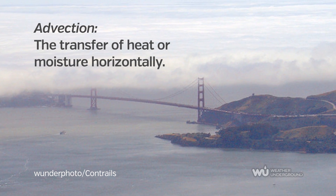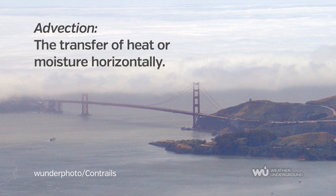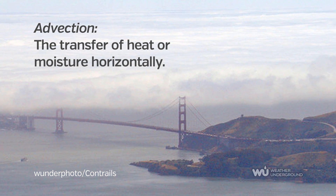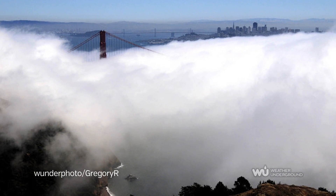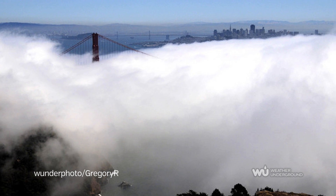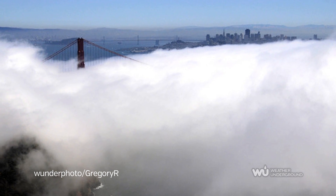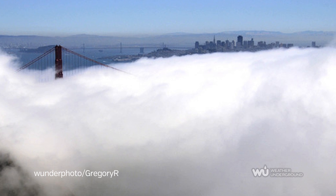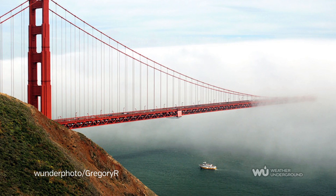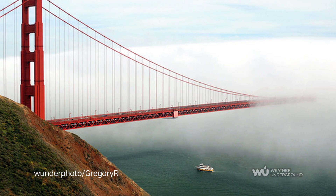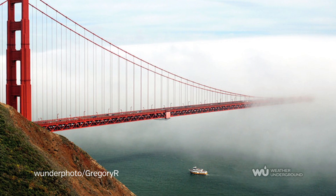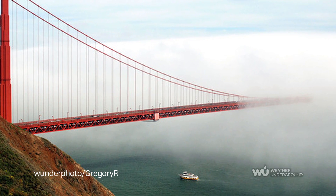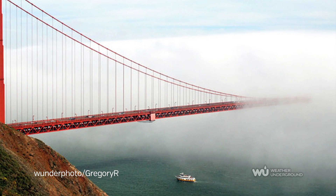Advection fog forms as wind blows moist air over a cool surface. Advection is the transfer of heat or moisture horizontally. It is most common at sea when moist air moves over cooler water or land. Fog forms at sea when warm air moves over a cold current, reducing the amount of water vapor the air can hold, and allows for condensation to occur.